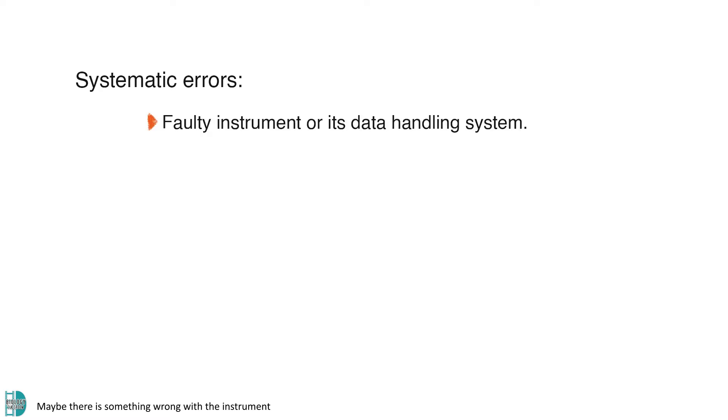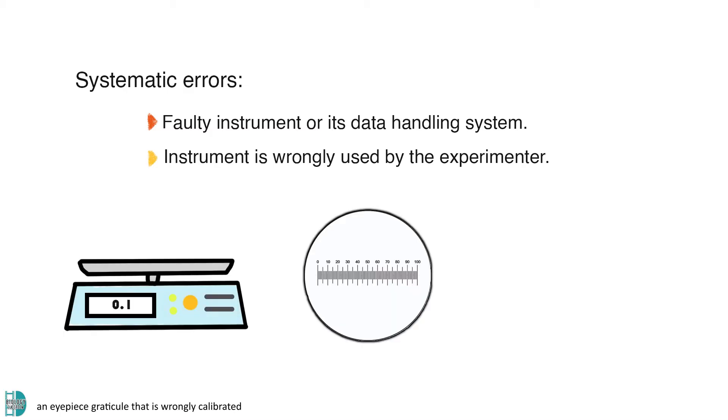Maybe there's something wrong with the instrument or its data handling system, or maybe the instrument is wrongly used by the experimenter. For example, a weighing scale that cannot be zeroed, an eyepiece graticule that is wrongly calibrated, and a ruler that has a wrong scale.